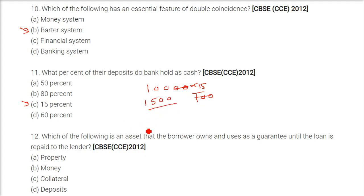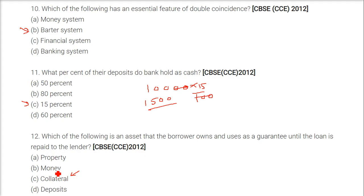Which of the following is an asset that the borrower owns and uses as a guarantee until the loan is repaid to the lender? The answer is collateral — the asset, land, or anything which can be liquidated or sold if the borrower doesn't return the loan.